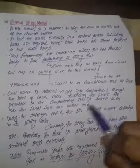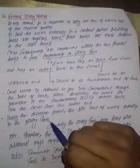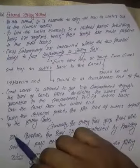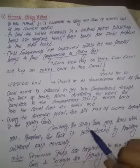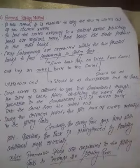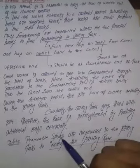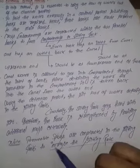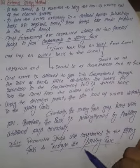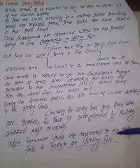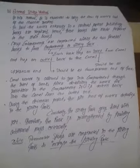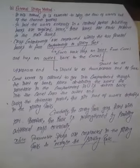During the detention period, the silt load of the water deposits into the silting tank, which gradually fills with silt and thereby strengthens the bank by providing additional mass externally. Permeable spouts are constructed in the silting tank to increase the silting rate. This concludes the external silting method.